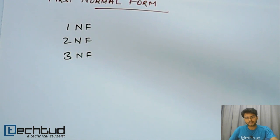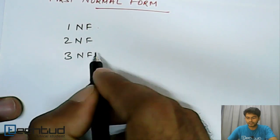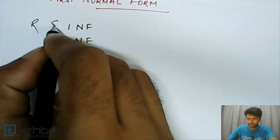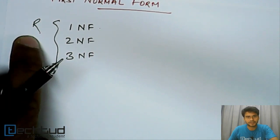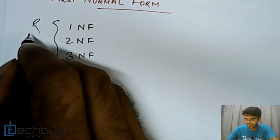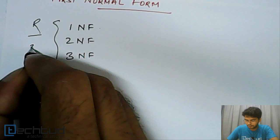A relation could be in various normal forms. Let's say it is in first normal form, second normal form, and third normal form. All these criteria of normal forms being satisfied by relation R, then we say that this relation R is in third normal form.